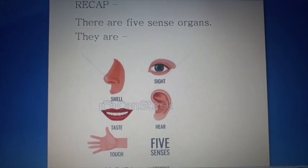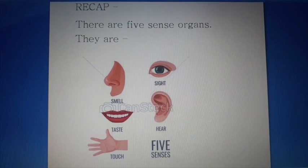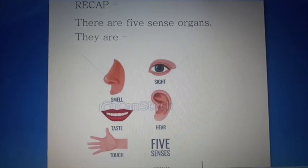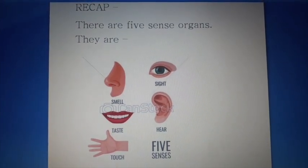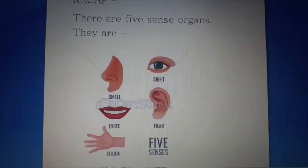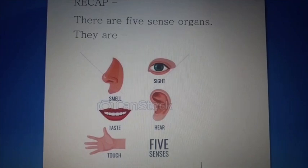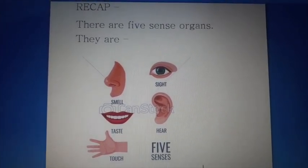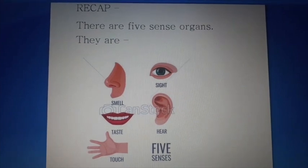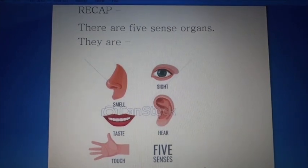In the last video we discussed our 5 sense organs. First organ is eyes — eyes are used to see. Second organ is nose — nose helps us to smell. Third organ is tongue — tongue is used to taste. Fourth organ is ears — ears help us to hear. And fifth organ is skin — skin helps us to feel.